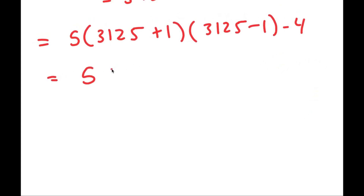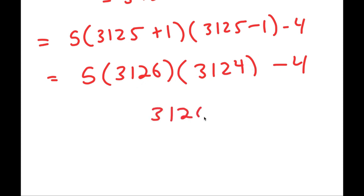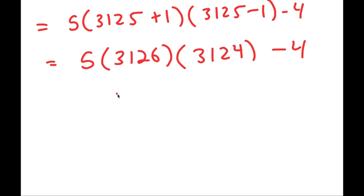Now all that's left to do is simplify. So 3125 plus 1 is 3126, and 3125 minus 1 is 3124, and then we have minus 4 at the end. The main challenge right now is multiplying 3126 with 3124. We could multiply the normal way, however this is going to take very long and could result in many errors. So instead I'm going to use another method that's much simpler and more efficient.